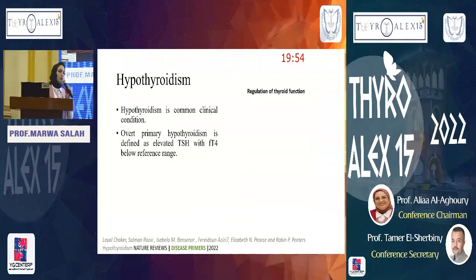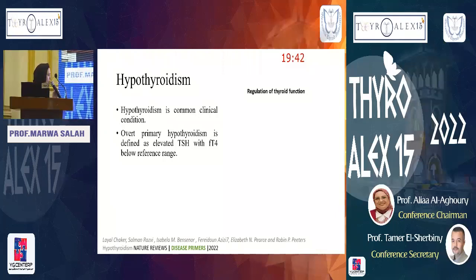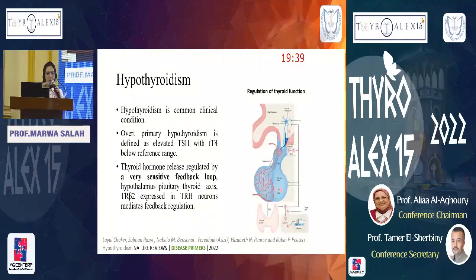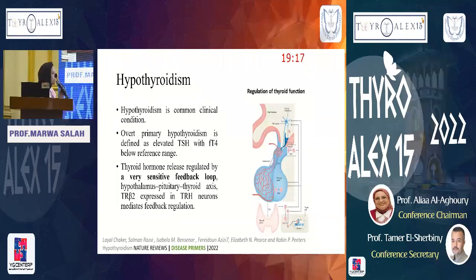Hypothyroidism is a known common clinical condition of thyroid hormone deficiency. We diagnose overt hypothyroidism by the presence of elevated TSH with suppressed T3 and T4 levels. Thyroid hormone function is regulated by a sensitive feedback loop including the hypothalamic-pituitary-thyroid axis, where peripheral thyroid hormones act on thyroid receptor type beta expressed on hypothalamic neurons, mediating regulation and release of TRH, TSH, and thyroid hormones.